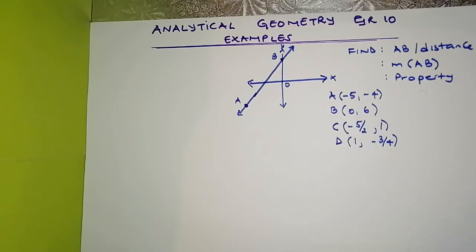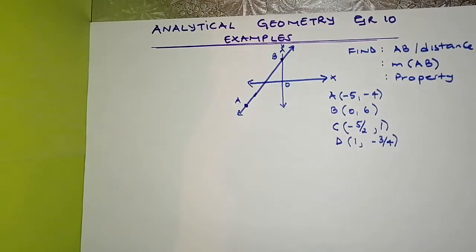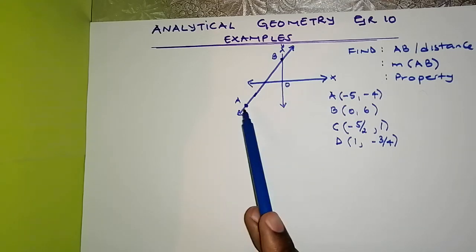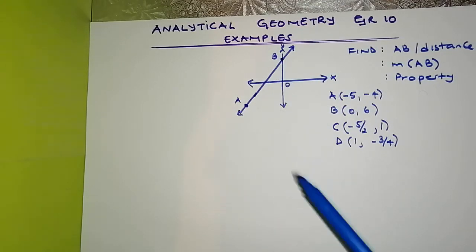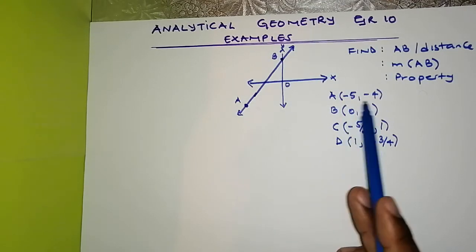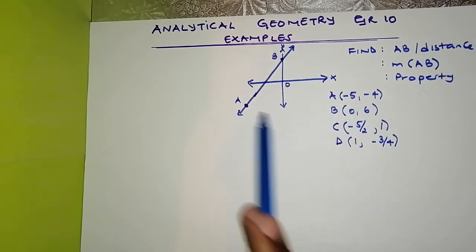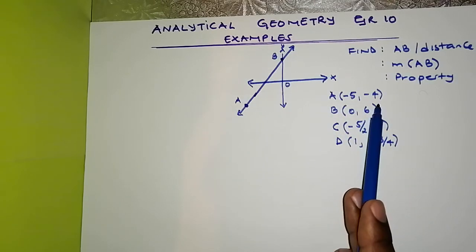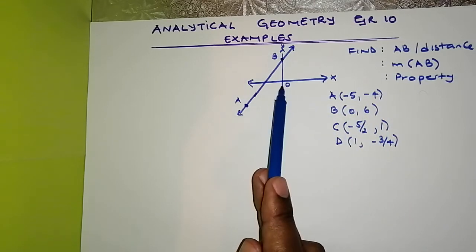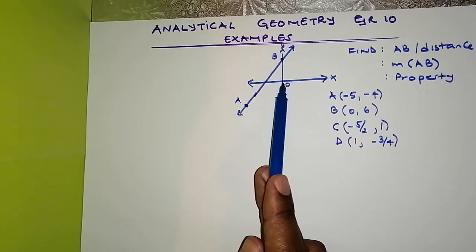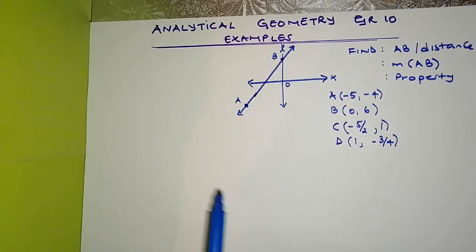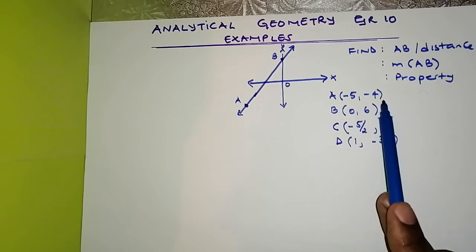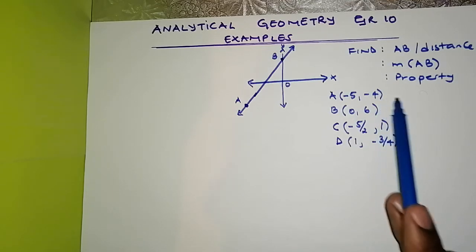We're going to do an example right here. We are given a line with points A and point B. These are the coordinates of A: negative 5 and negative 4. So it's 5 units to the left and 4 units downwards.